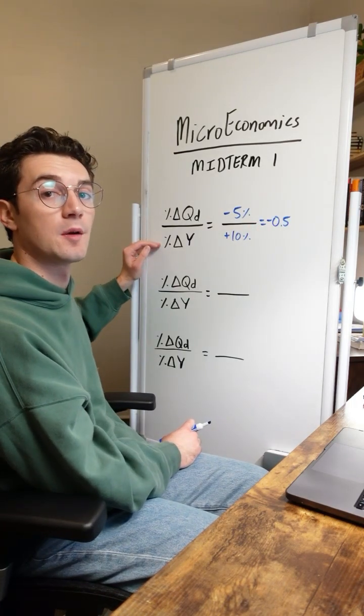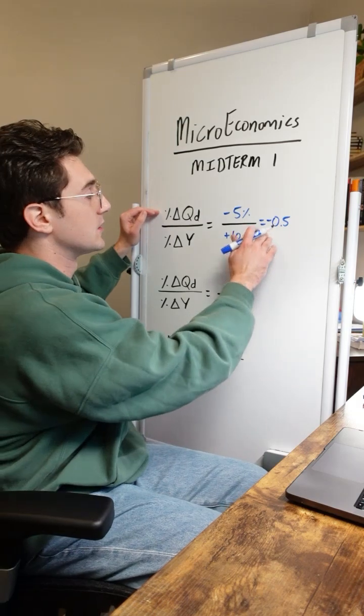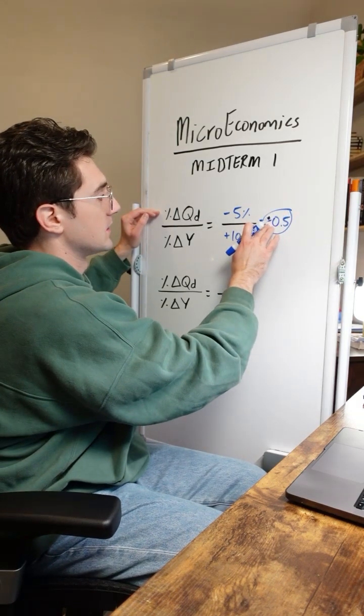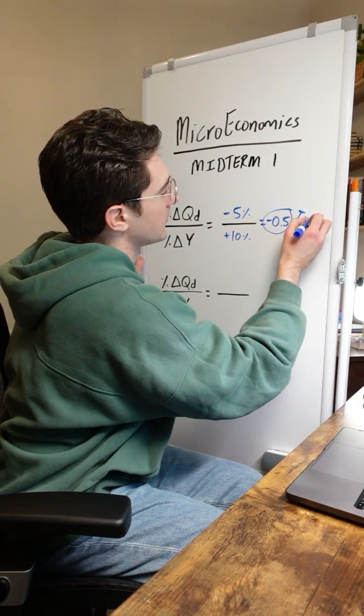In other words, when income increases by 1%, the quantity demanded of the good decreases by 0.5% because it's a negative sign. Meaning that this is an inferior good.